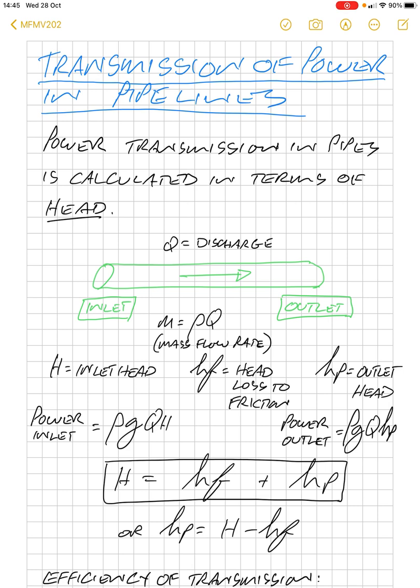So, the inlet power would be rho gQH, while the outlet power is rho gQHp. And to put this into an equation, our inlet head is equal to the friction lost through the pipe plus the outlet head.